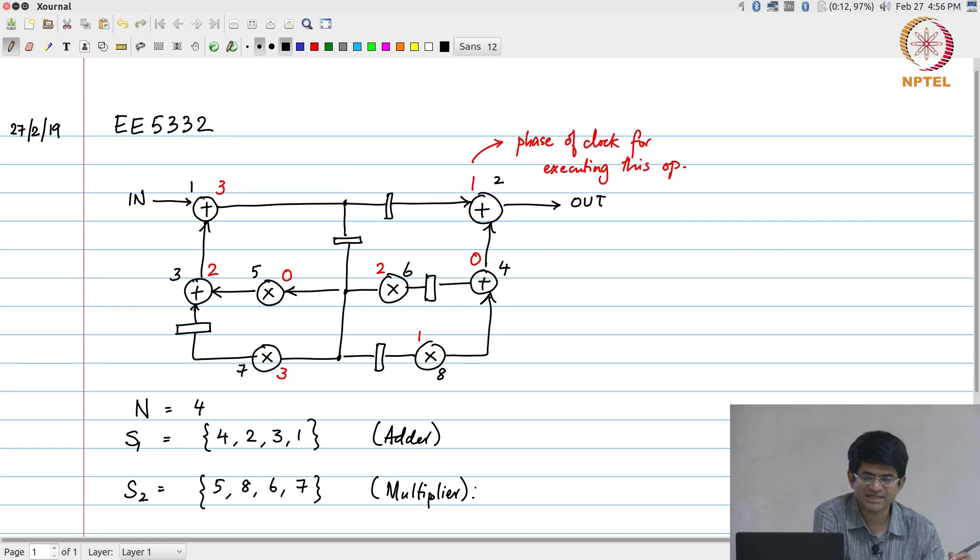This diagram is sort of closer to a data flow graph than a hardware block diagram in that sense. What it is showing is only the connections between the different nodes, the dependencies and also how many delay elements, sample delays, are present on the edges that link different nodes. Because of that you need to sort of interpret this a little bit carefully.